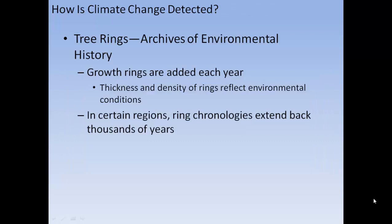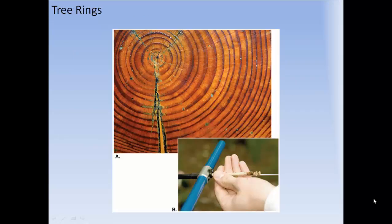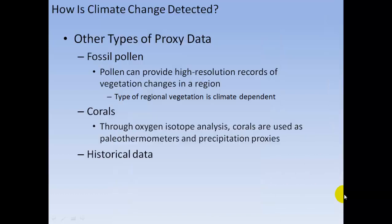Tree rings are archives of environmental history. Growth rings are added each year, and the thickness and density of the rings reflect environmental conditions. In certain regions, ring chronologies extend back thousands of years. The widths of tree rings give an indicator of the conditions at the time.